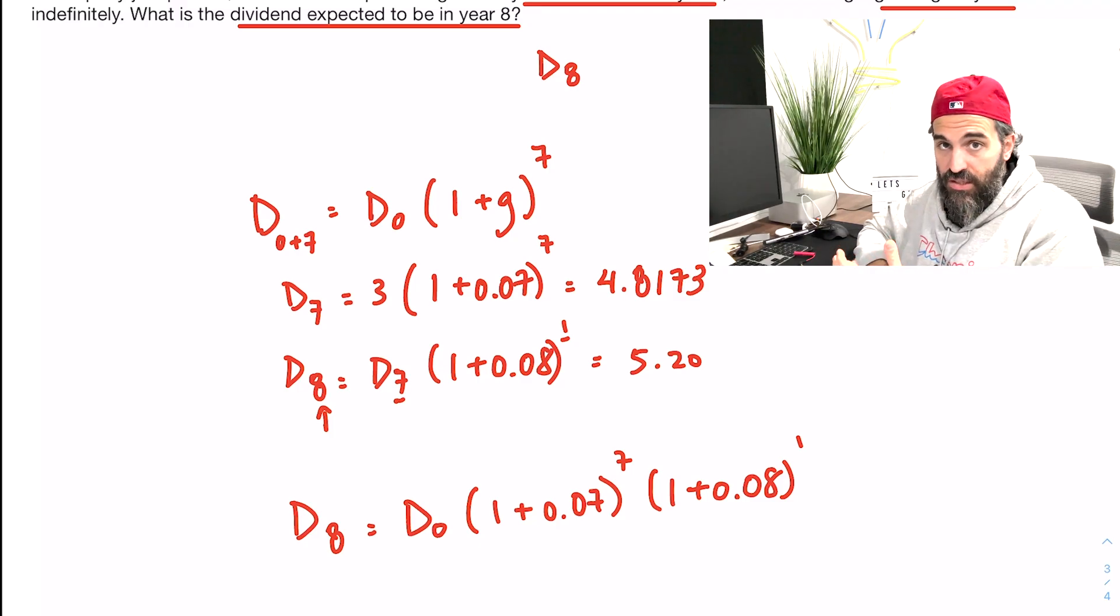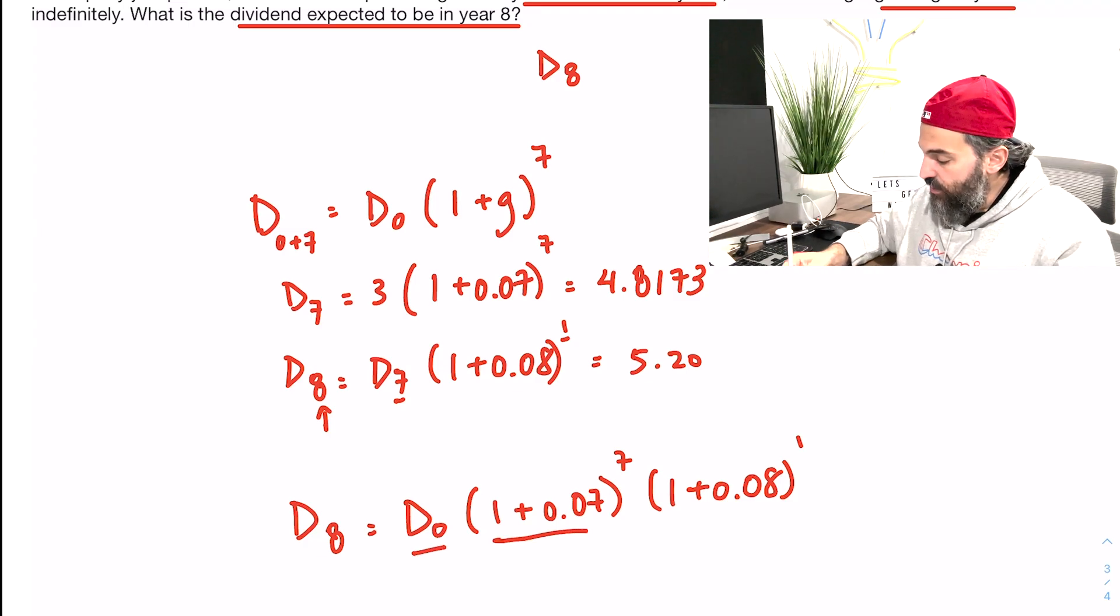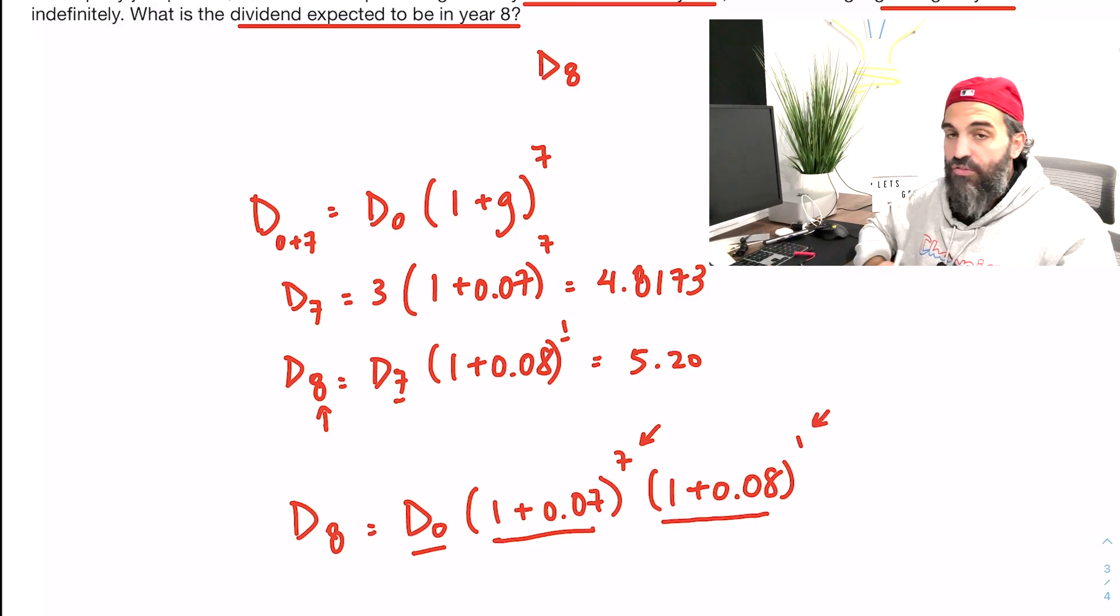Now, you don't need to do it like this. But if you are comfortable with it, it is a little bit quicker than doing it in steps. I'm starting with D0. It's going to grow by 7% seven times, and it's going to grow by 8% one time before I get to D8.